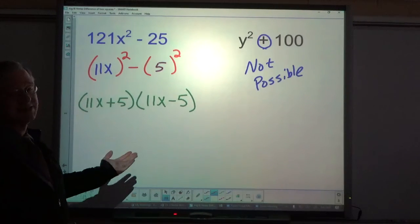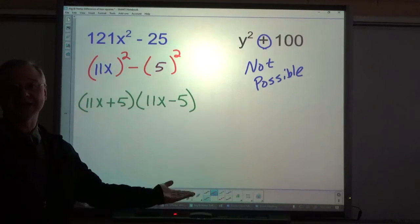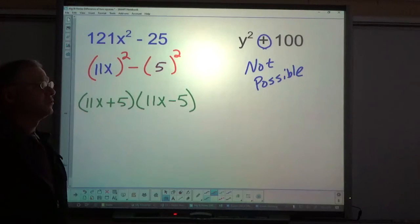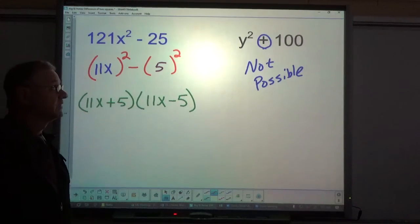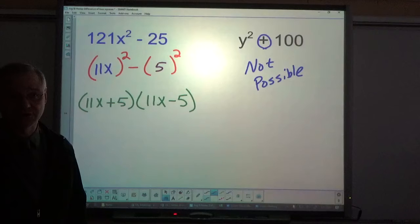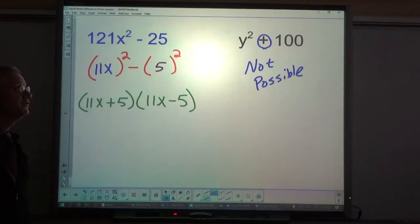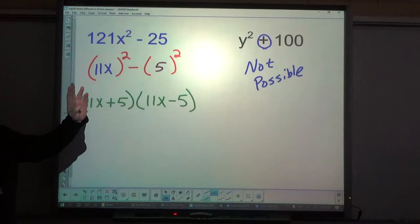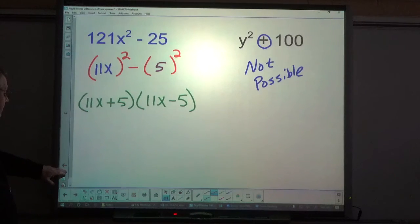So why not y minus 10, y minus 10? Now you've got a negative 20y in the middle term, not 25. So you can't do that one with difference of squares. All right, let's continue.